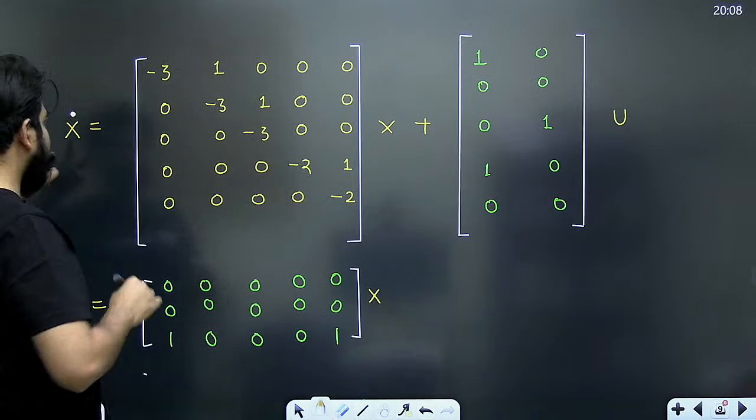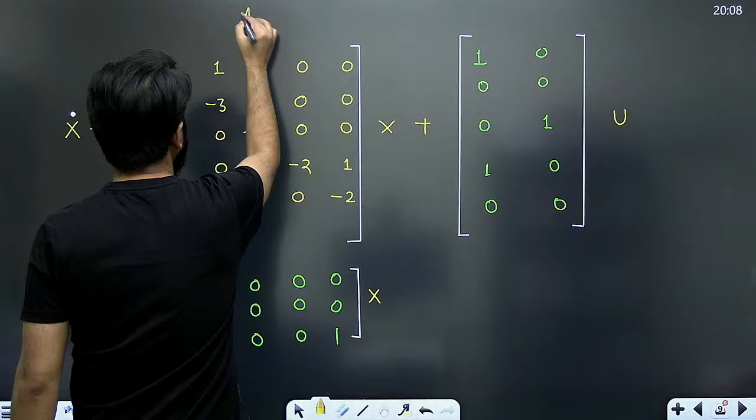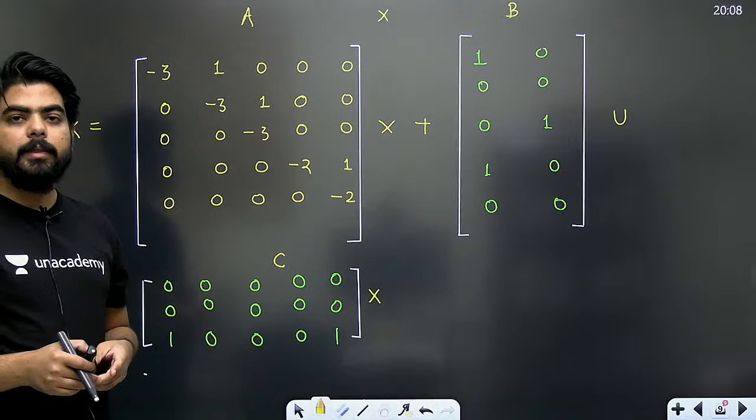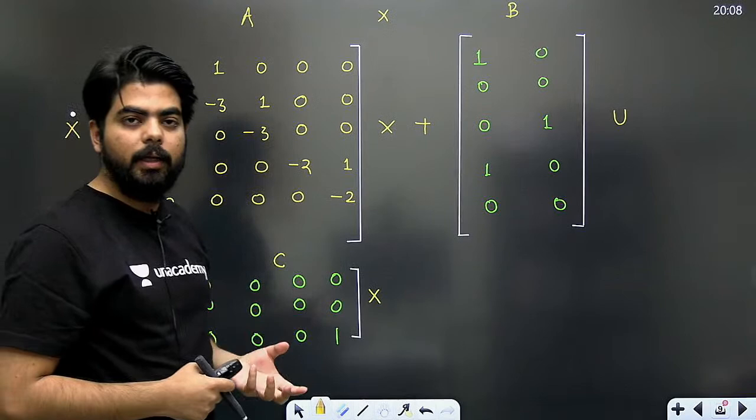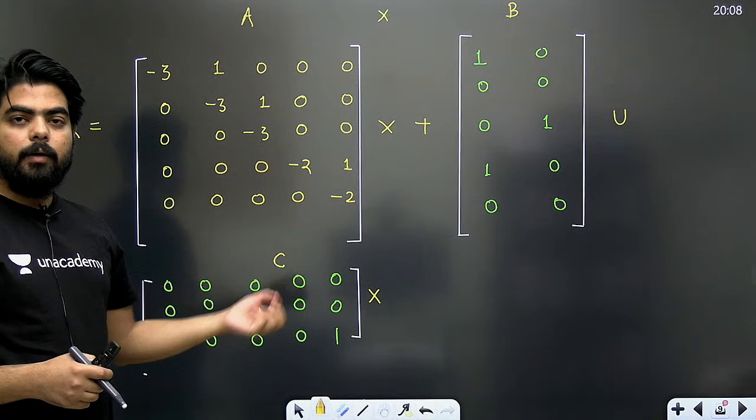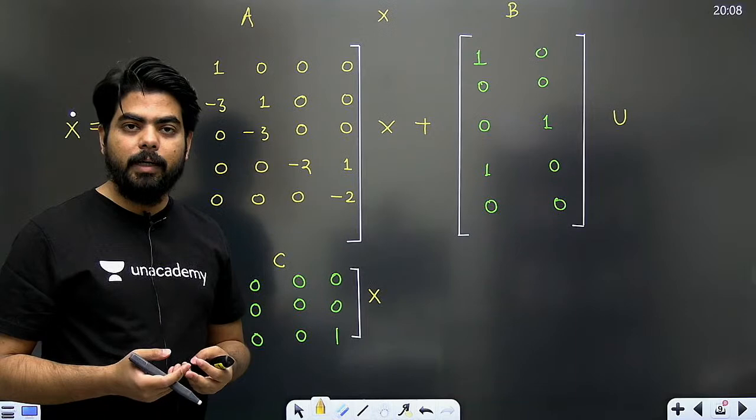State space में x_dot = Ax + Bu होता है। इस matrix में A और B की values होती हैं, C और D भी होते हैं जहाँ D = 0। अब अगर आप यहाँ पर judge करने की कोशिश करो कि इतनी बड़ी matrix का Controllability और Observability निकालने बैठ जाते by using Kalman test या any other test, तो बहुत हालत खराब हो जाती। यहाँ पे 5×5 के matrix दे रखे हैं - अगर controllability check matrix या observability check matrix बनाने बैठ जाते तो matrix multiplication करना पड़ता, B निकालना पड़ता, AB, A²B, और A⁴B तक calculate करना पड़ता, फिर उन्हें मिलाकर determinant निकालना पड़ता।